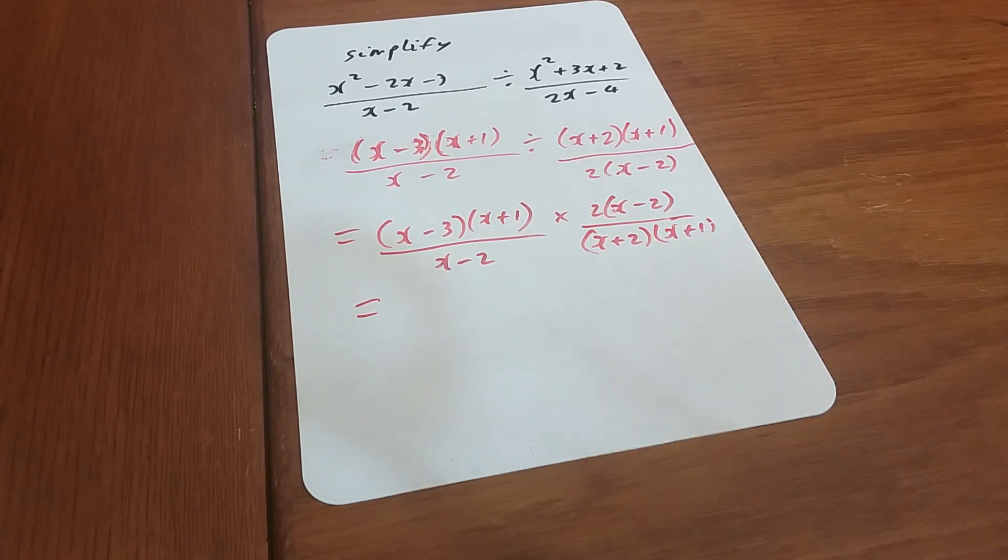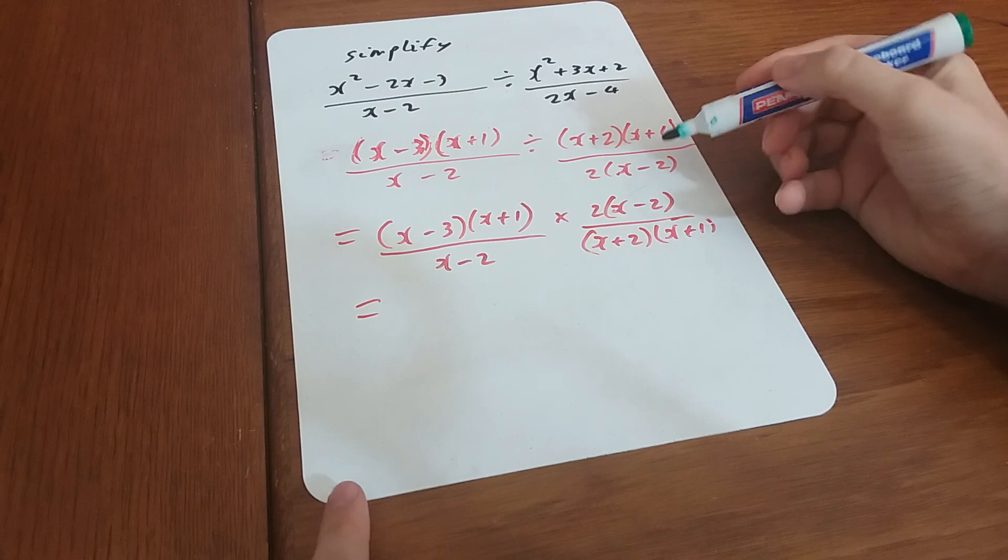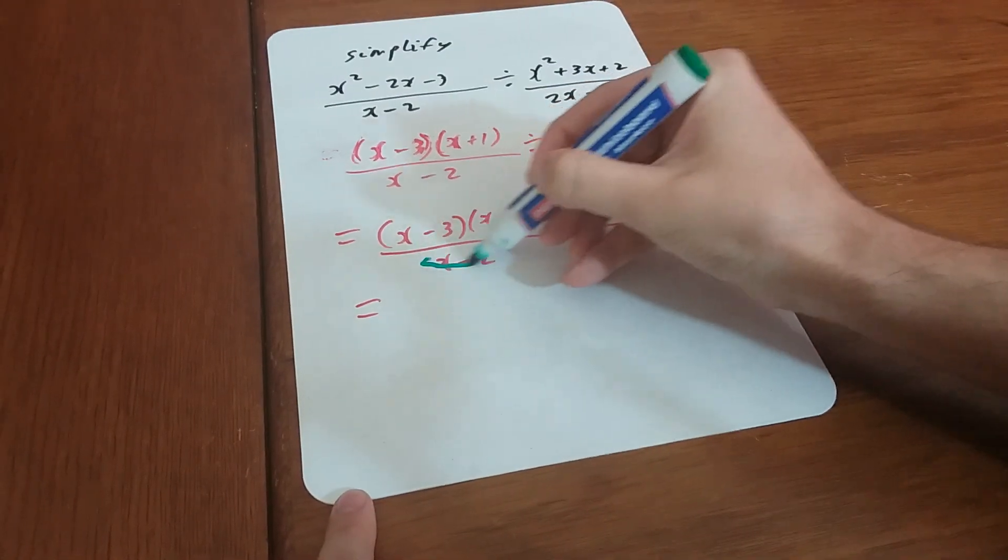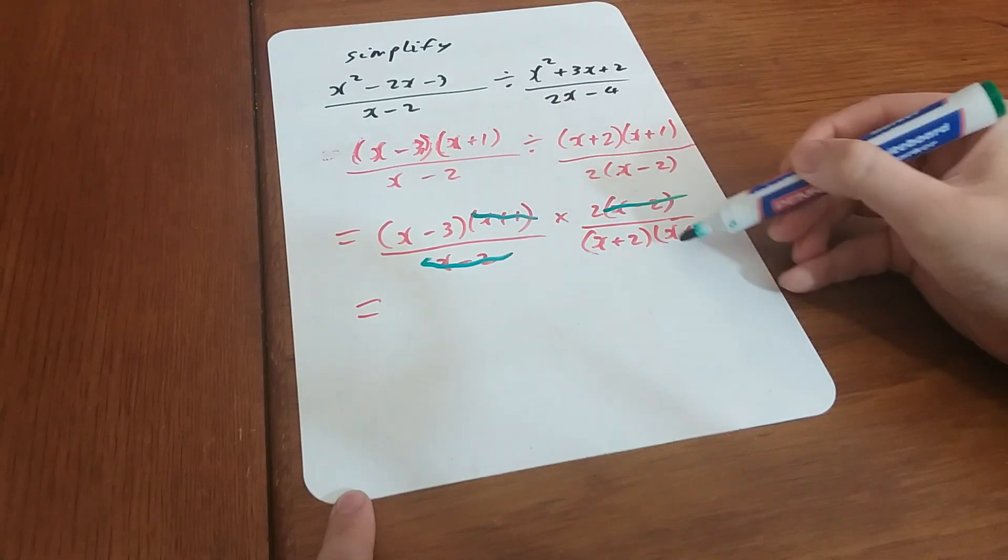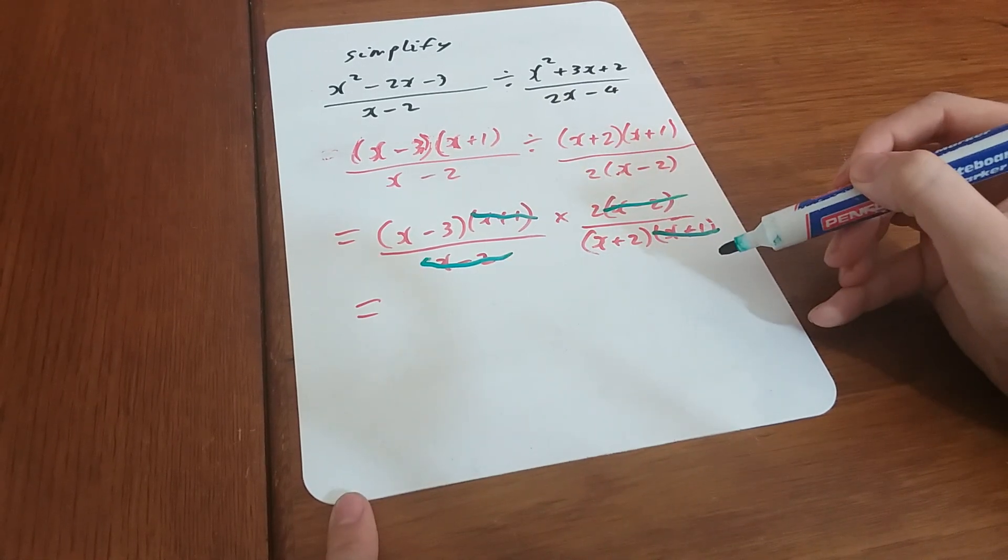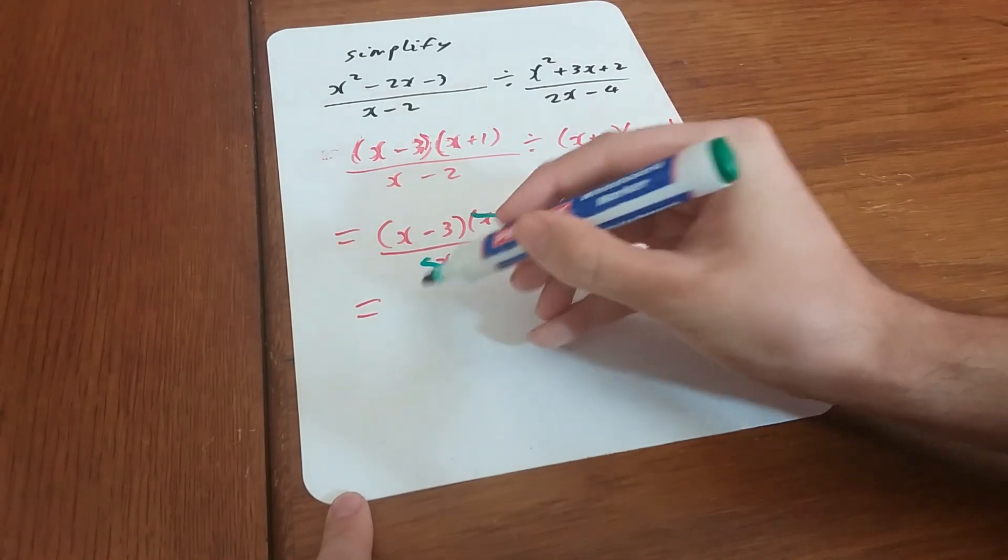Okay, switching it all together, let's see what we can cancel out here. We're looking for any factors that are on the top and the bottom. I can see a factor of x minus 2 here, which can cancel out with this one here. Anything else? Well, we've got an x plus 1 on the top and the bottom. They can cancel out.